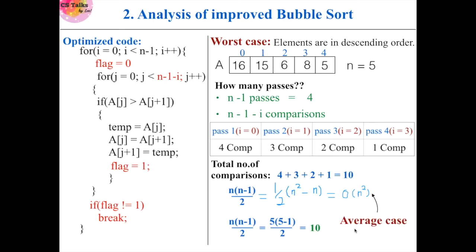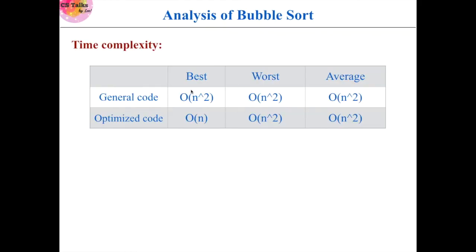The average case is also O(n²). Both loops execute completely, but we do not swap in every iteration since some elements may already be in the correct position. We still do n-1 passes with n-1-i comparisons each. Comparing both versions: standard bubble sort has O(n²) for all cases, while optimized bubble sort improves the best case from O(n²) to O(n).